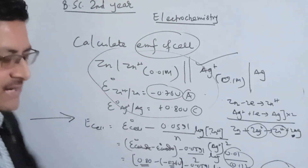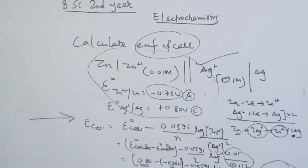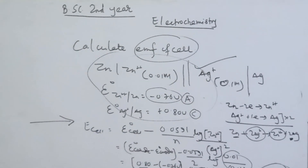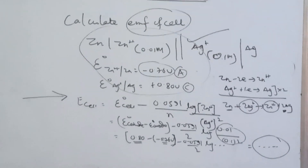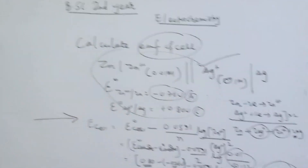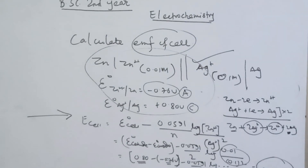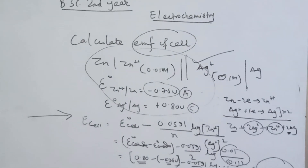If I apply the Nernst equation to this problem, I can solve it. You can check the cathode, anode, or the Nernst equation values. If you have any value of n, you can also check the concentration values.